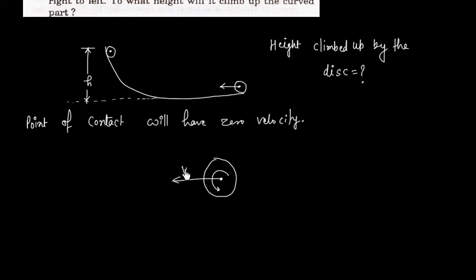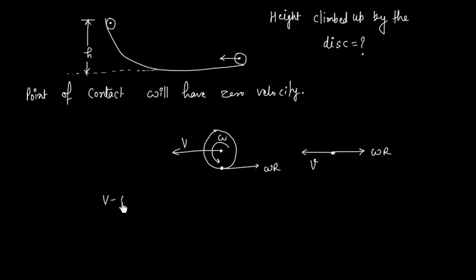So this is moving with velocity V and rotating with angular velocity Omega. So point of contact will have two velocities - one due to rotation, another due to translation. Since point of contact is at rest, we can write V is equal to Omega R.